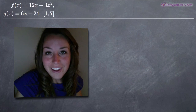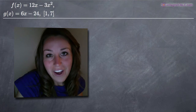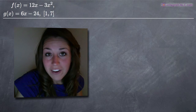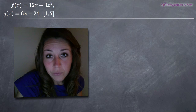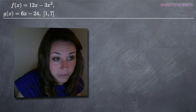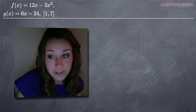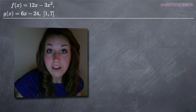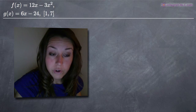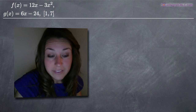Hi everyone! Welcome back to integralcalc.com. Today we're going to be doing another area between curves problem. We've been given the two curves f(x) = 12x − 3x² and g(x) = 6x − 24, and we've been asked to find the area between those curves on the range x = 1 to x = 7.